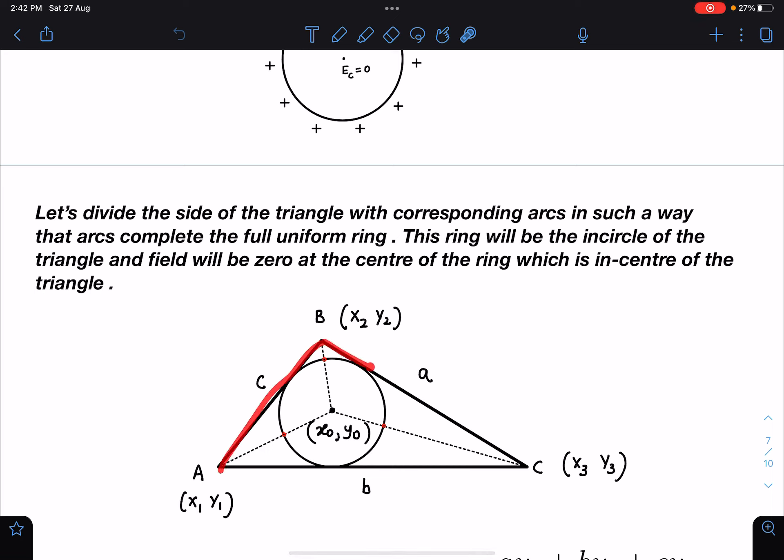And it becomes a uniform ring, so due to uniform ring field at the center of it will be zero. So that is the point, null point, which will exist in any triangle and will be corresponding to the incenter of the triangle.